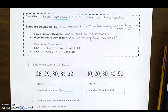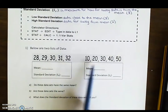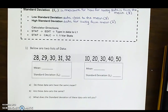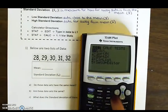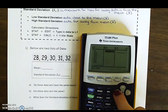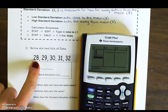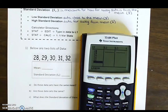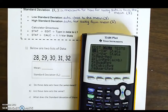Let's go through and try this with two sets of data. Below are two lists of data — if you take a look at both of these lists, they look very different from one another. So let's go through and actually find the standard deviation of them. We're going to go stat, edit, clear out any lists already in the calculator, and now type in the first list: 28, 29, 30, 31, and 32. Now we hit stat, calculate, and then one variable statistics. We hit enter.